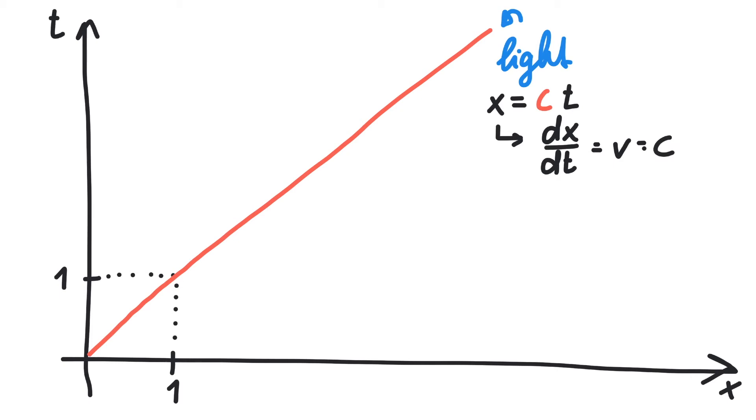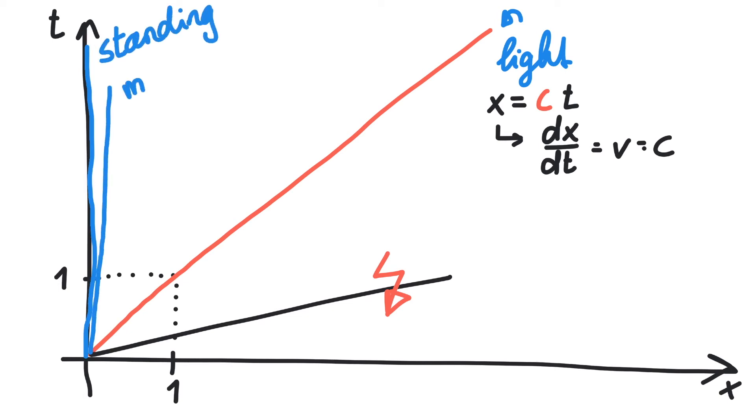One important aspect to notice is that nothing can move along a world line below the speed of light. Standing still, our world line goes straight up. Walking, running, even flying with a spaceship covers less distance than light would have traveled in the same time. Everything below the light's world line would travel faster than the speed of light, and according to Einstein, that's not possible.